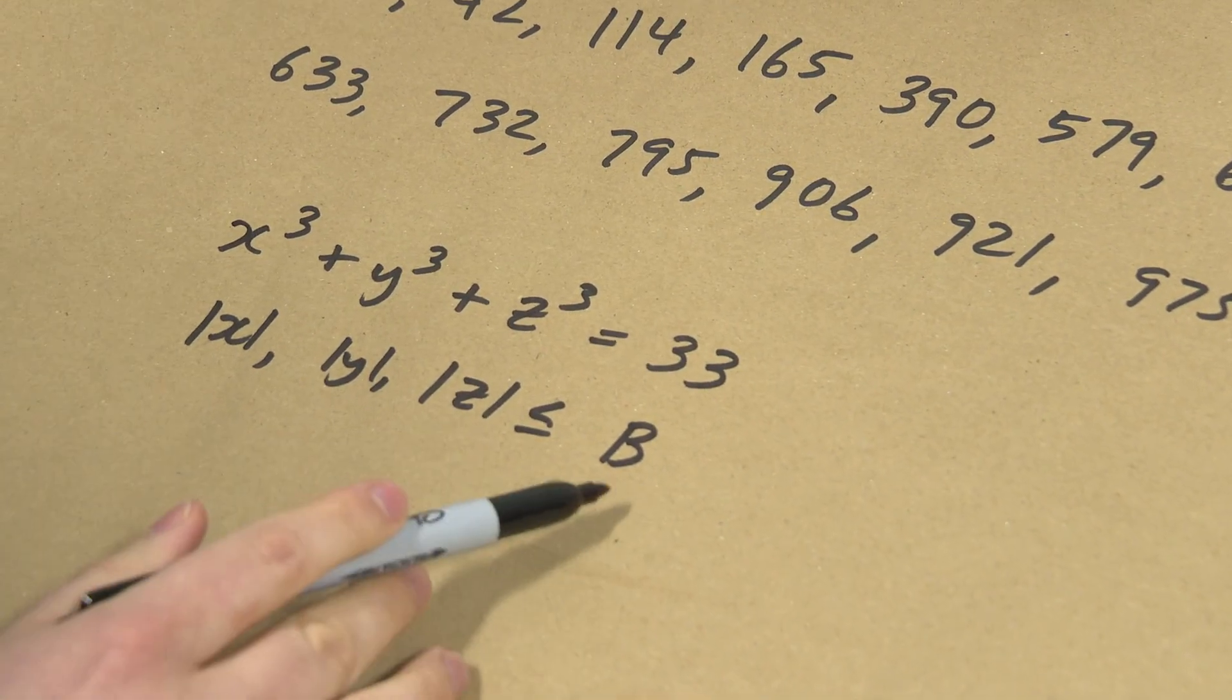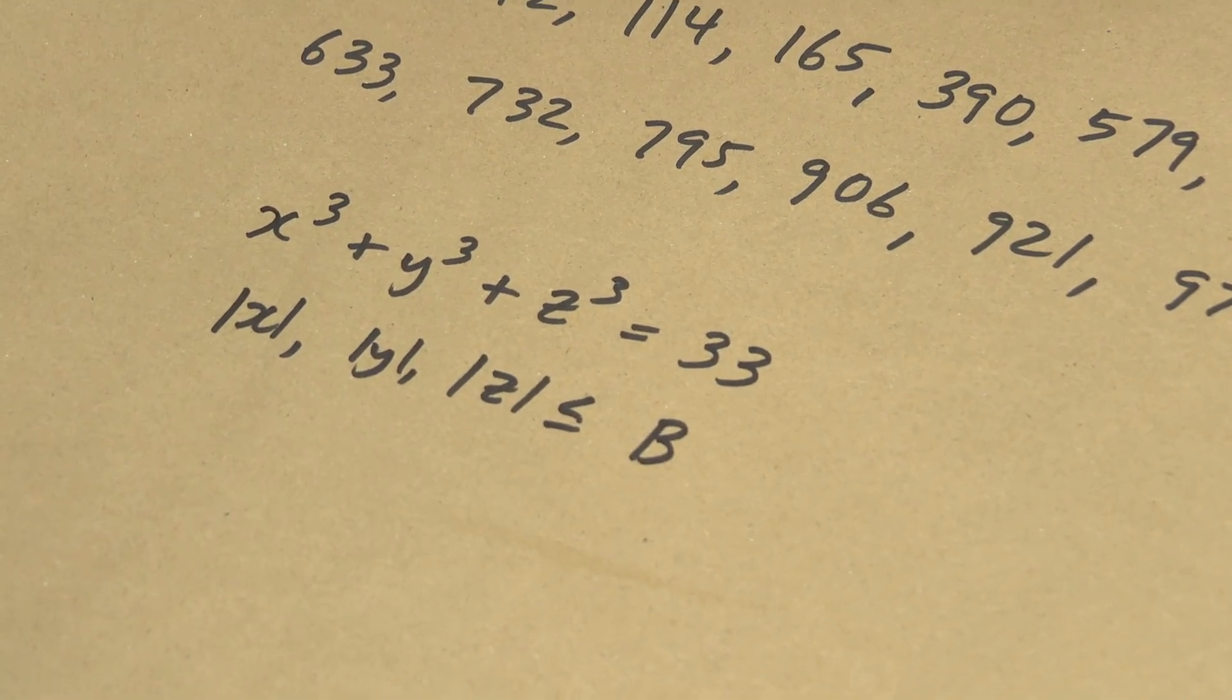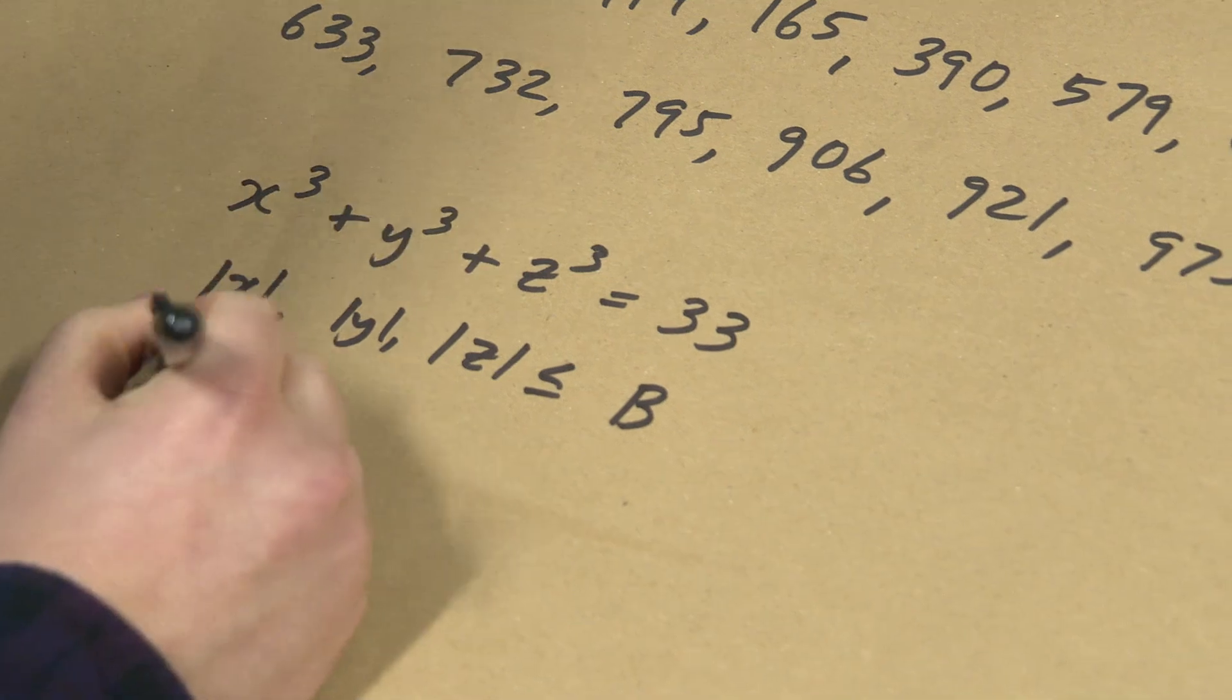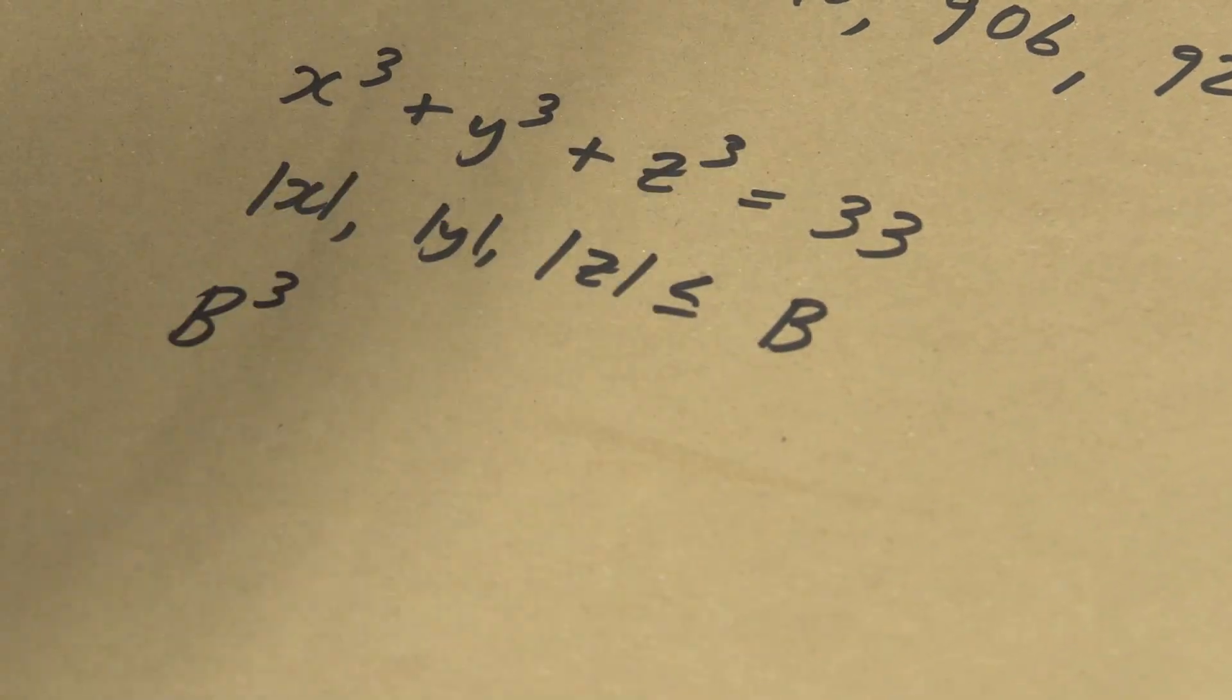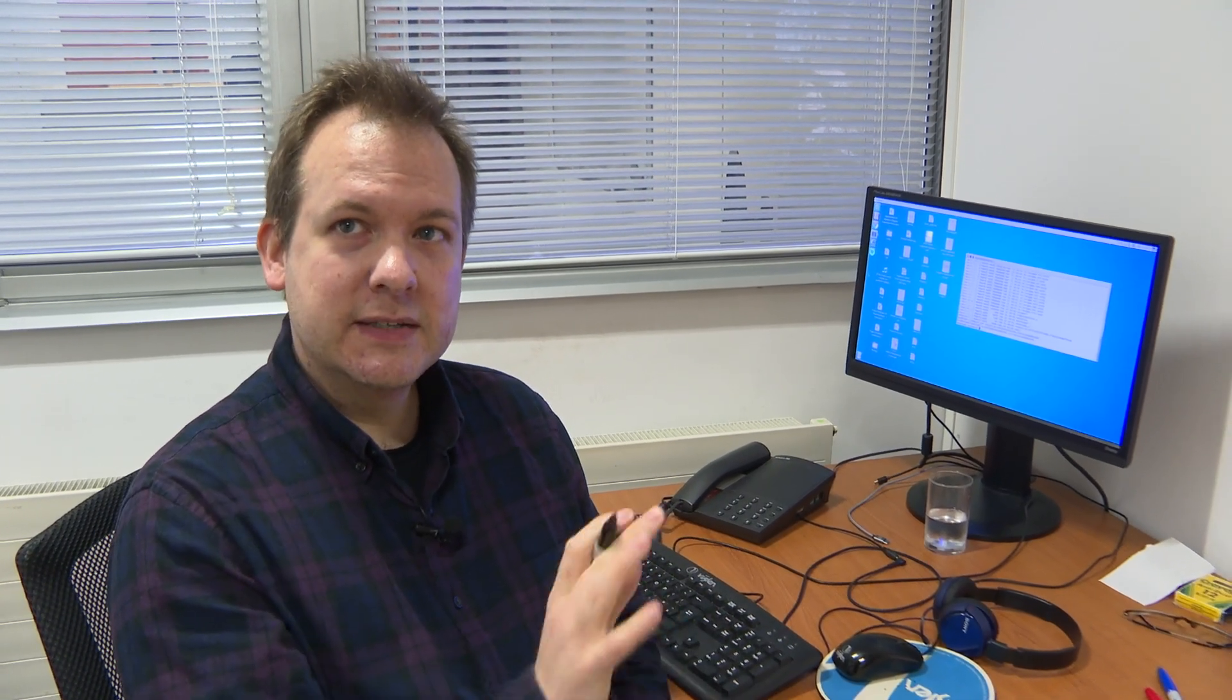And if you just went through all possibilities up to b, that's somewhere on the order of b cubed numbers to check. I said you can imagine b is a million. To put things in perspective, your smartphone can do a million things in the blink of an eye. A million calculations like this. But if I say a million cubed, that's in the realm of possible but very expensive to do on modern computers.